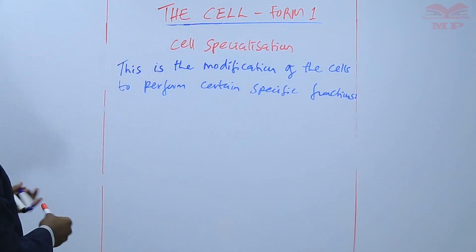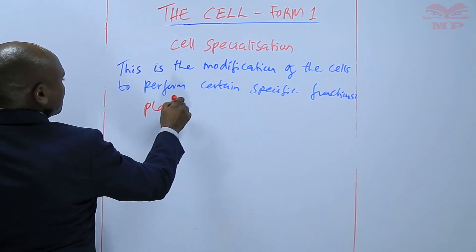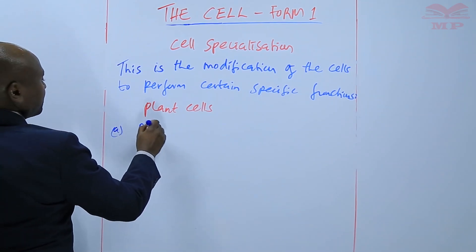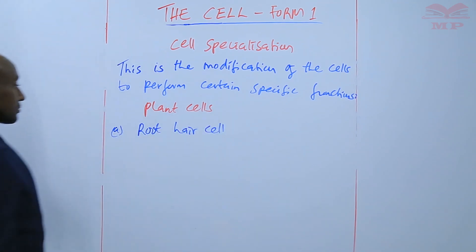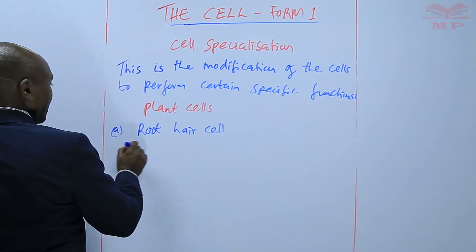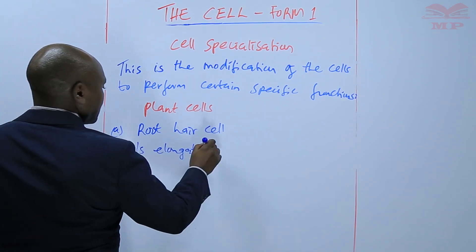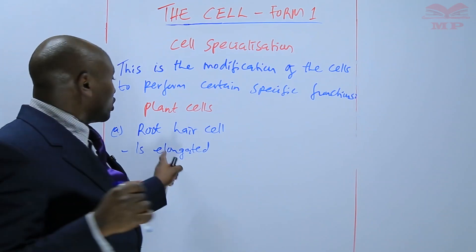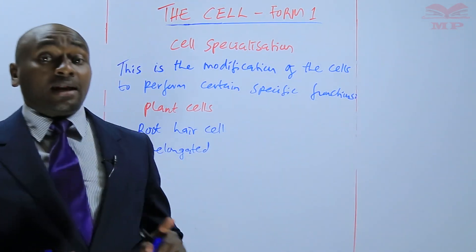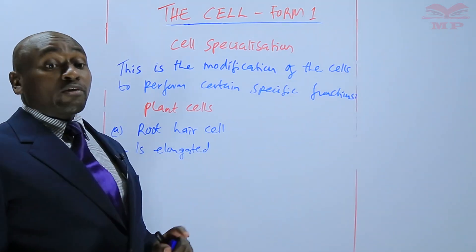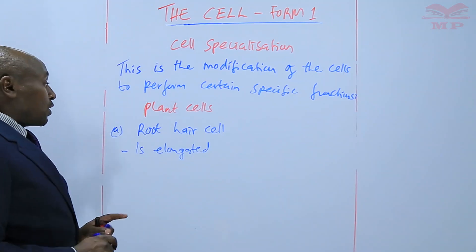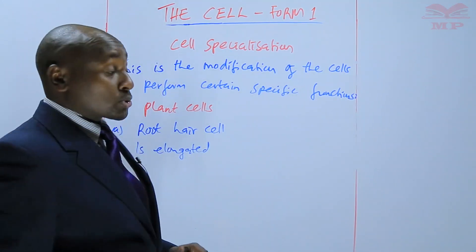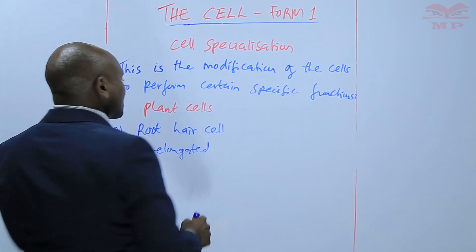We will give some examples and we shall start with plant cells. For instance, we have the root hair cell. The root hair cell is elongated — it has a long root hair. That modification has a certain importance: it helps to provide a large surface area for the absorption of water and mineral salts. That is why roots grow very long root hairs. The root hair cell is a specialized cell.